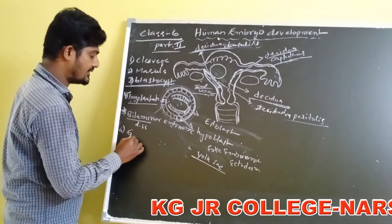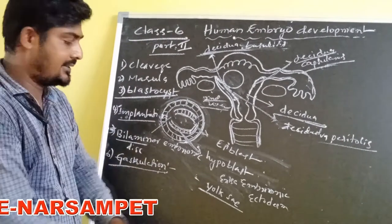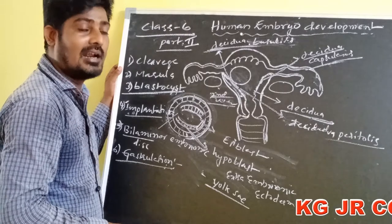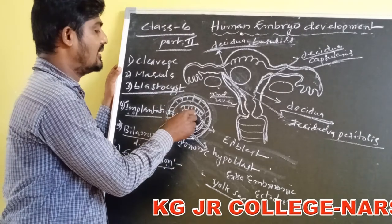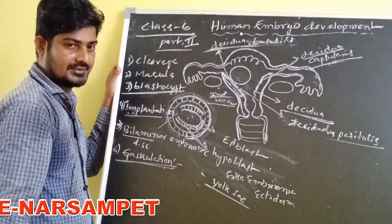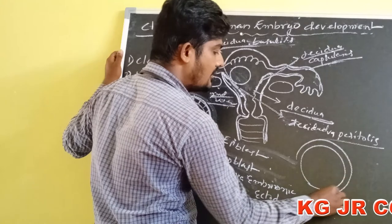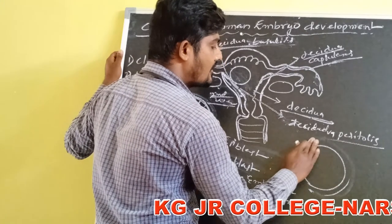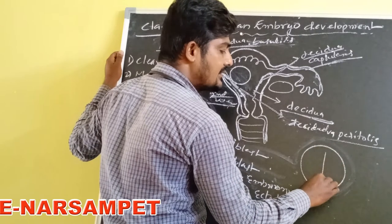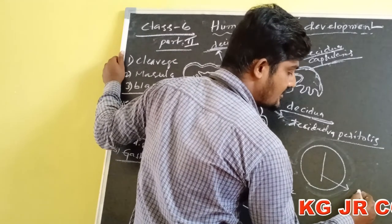The sixth stage is gastrulation. Gastrulation is an important stage involving differentiation, proliferation, and rapid movements of cells within the embryonic disc. During gastrulation, when Rauber's cells disappear, the embryonic disc is seen clearly. Along the longitudinal axis of the embryonic disc, a streak appears — this is called the primitive streak.